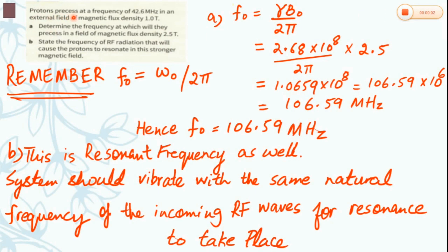Another question: protons precess at a frequency of 42.6 megahertz in an external magnetic field of flux density 1 tesla. Determine the frequency at which they will precess in a magnetic field of flux density 2.5 tesla. Part B: state the frequency of radio frequency radiation that will cause the proton to resonate in this stronger magnetic field. Remember that F naught equals omega naught over 2 pi. In part A, we substitute the value of omega naught, which is gamma B naught. For protons, gamma is 2.68 times 10 to the power 8, the field is 2.5, and after simplification it comes out to be 106.59 megahertz.